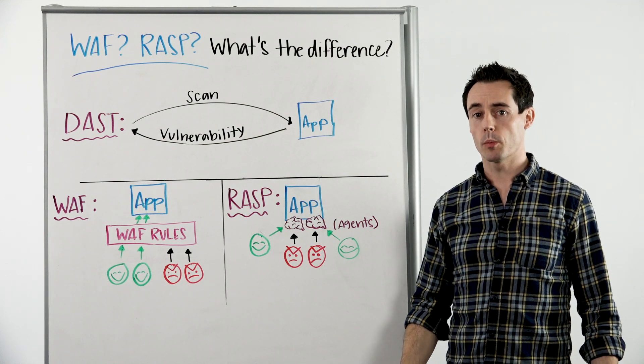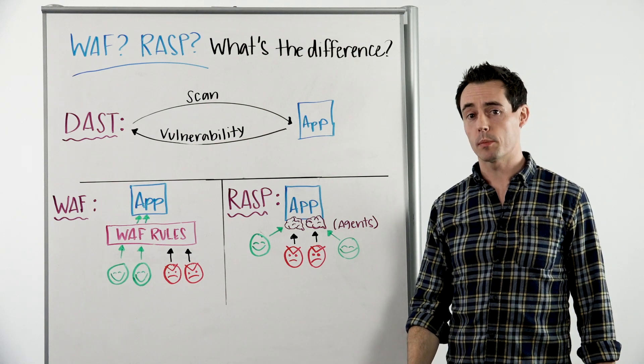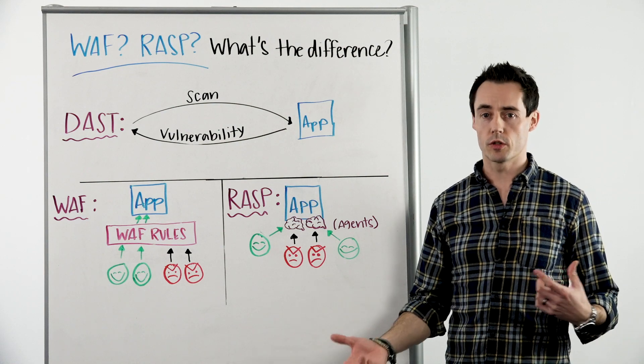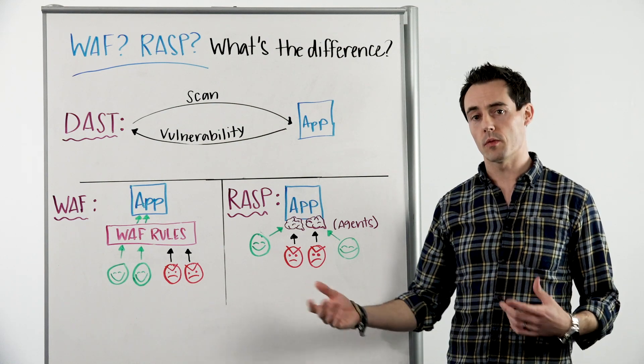Today I'm going to talk about some emerging technologies in the application security space, but more specifically trying to help explain a couple of the current cryptic acronyms: WAF and RASP.